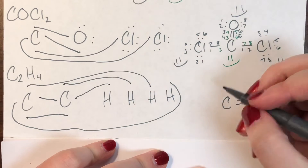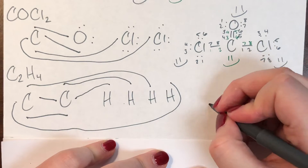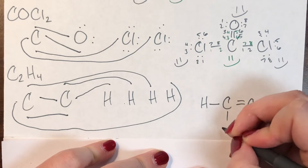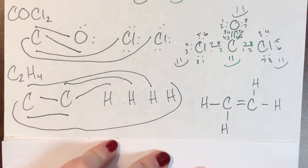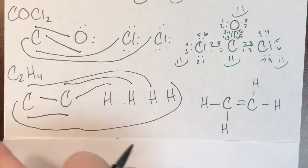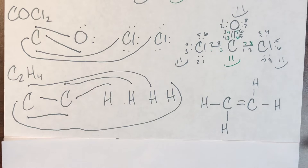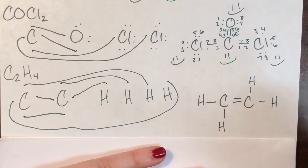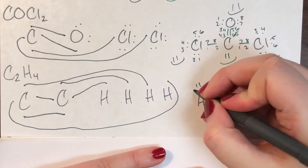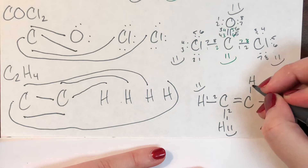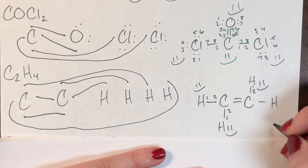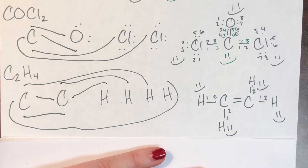So the two carbons function as the central atoms together, with a double bond between them, and two hydrogens connected to each carbon. There are no extra electrons to represent as lone pairs. Checking the hydrogens: each one wants only two electrons, and each hydrogen has access to one and two, so all four hydrogens are happy.